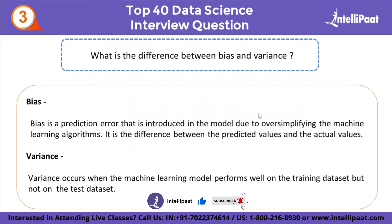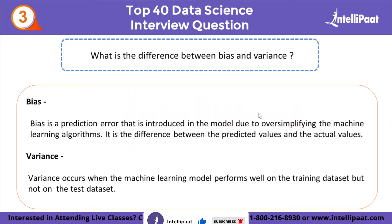What is the difference between bias and variance? Bias is a prediction error introduced in the model due to oversimplifying the machine learning algorithm. It is the difference between the predicted values and the actual values. Variance occurs when the machine learning model performs well on the training dataset but not on the test dataset.